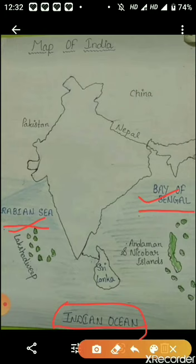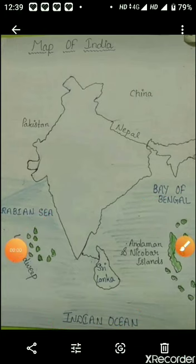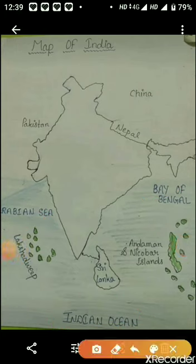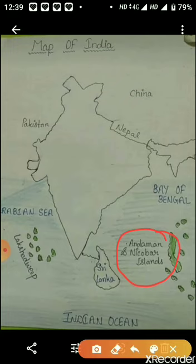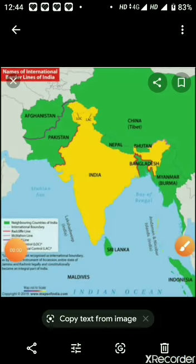There are two groups of islands: one is the Andaman and Nicobar Islands in the Bay of Bengal, and the second is the Lakshadweep Islands in the Arabian Sea.